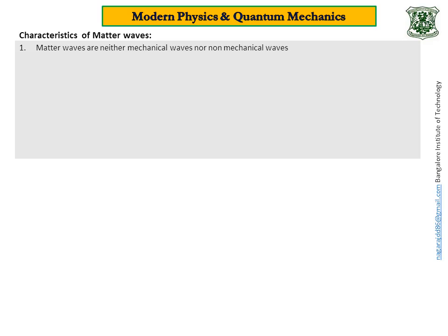You know, what are mechanical waves? Waves which require material medium for the propagation are known as mechanical waves. For example, sound. And the waves which do not require any medium for the propagation are known as non-mechanical. For example, light. But matter wave does not come under either mechanical category or non-mechanical category.